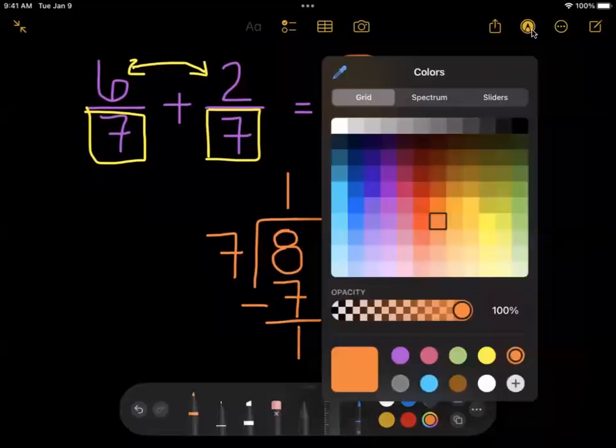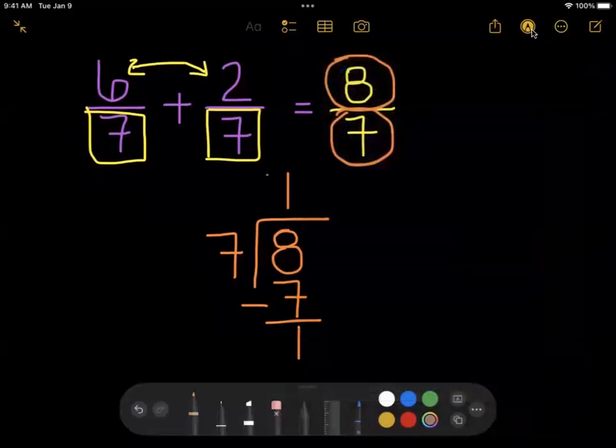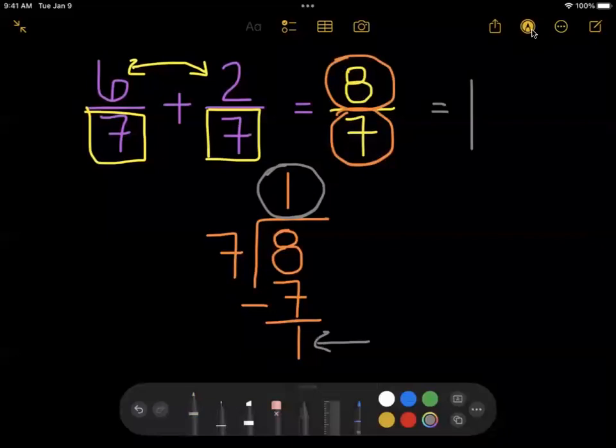Here's how it becomes a mixed number. The number up here on the top that we got as our answer becomes the whole number. So since seven went into eight one time, we know that we could take one whole out of eight sevenths. The remainder down here is what we would have left over if we took seven sevenths away from eight sevenths. We'd have one seventh left over, so that's going to become the numerator.